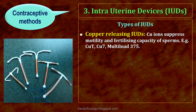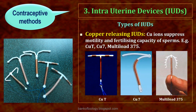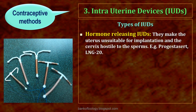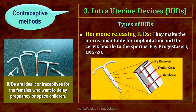Copper-Releasing IUDs: Copper ions suppress motility and fertilizing capacity of sperms. Examples: Copper-T, Copper-7, Multiload-375. Hormone-Releasing IUDs make the uterus unsuitable for implantation and the cervix hostile to sperms. Examples: Progestasert, LNG-20, etc. IUDs are ideal contraceptives for females who want to delay pregnancy or space children.